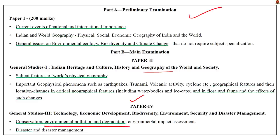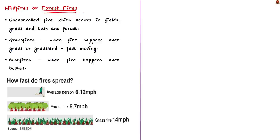Wildfires are nothing but forest fires. These are defined as the uncontrolled fire which occurs in fields, grass or bushes as well as in the forest itself. Particularly when the fire happens over grassland it is specifically known as grass fires and when it happens over bushes it is known as bushfires. Among these, grass fires are the fast moving ones.